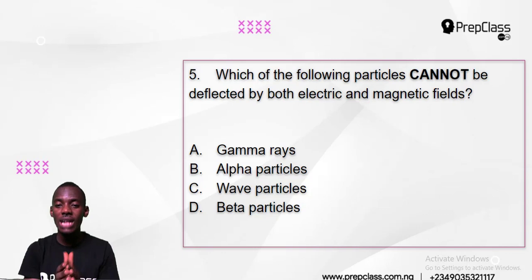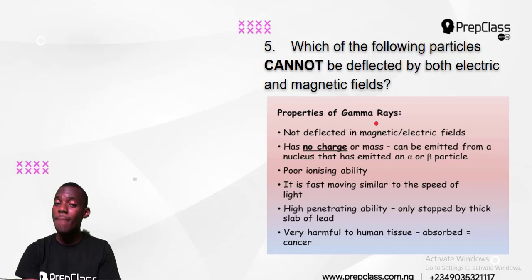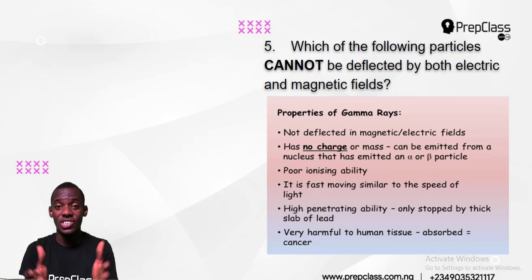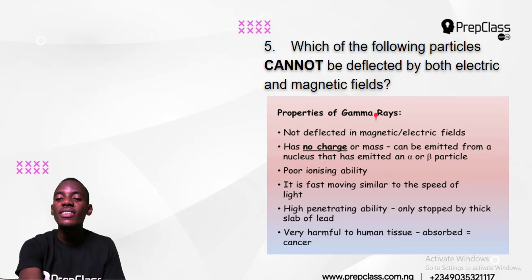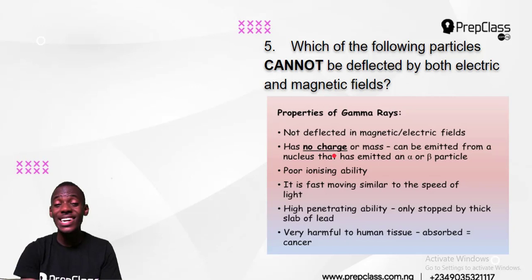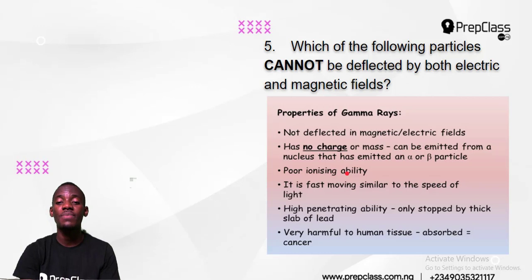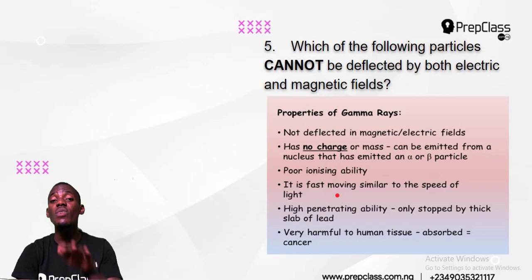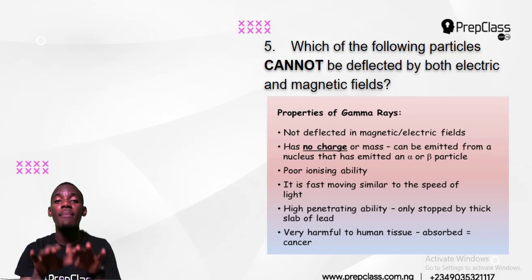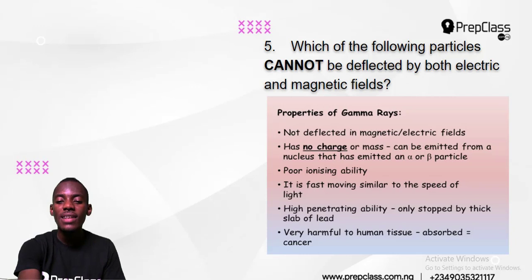So gamma ray cannot be deflected by electric or magnetic field. The properties of gamma ray: number one — not deflected by magnetic or electric field, because it is very strong. Number two — it has no charge; it is chargeless. Alpha is positive, beta is negative, but gamma is chargeless. Number three — it has poor ionizing ability; it does not easily ionize. And it is fast-moving, similar to the speed of light, because it is electromagnetic.